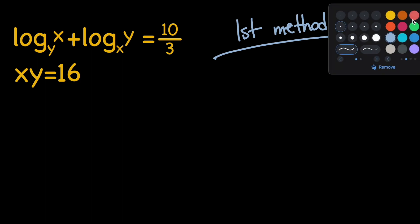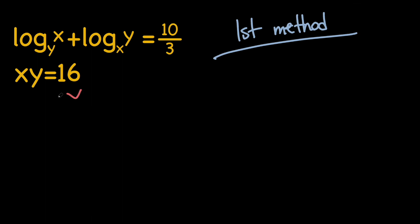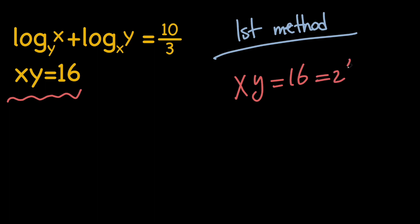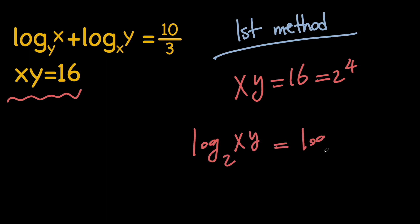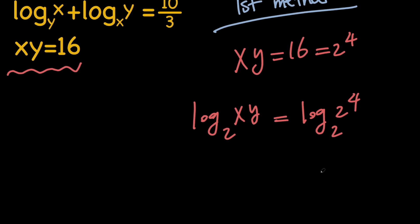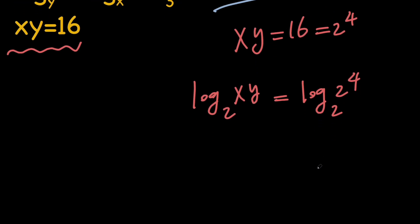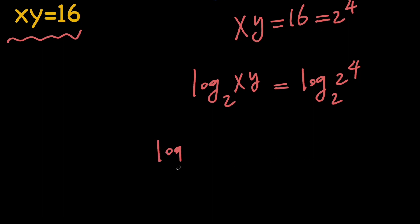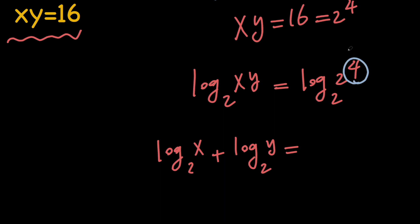In the first method, let's go ahead and start working on the second equation, which is x times y equals 16. Notice that 16 is 2 to the fourth, and the base of this exponent is 2. So let's go ahead and take the log of both sides with base 2 to get log of x times y with base 2 equals log of 2 to the fourth with base 2. Next, let's go ahead and use the product rule on the left hand side to have a sum of two logs. And then by using the power rule, we can take this power and bring it in front and use it as the coefficient of log.